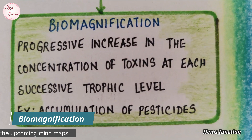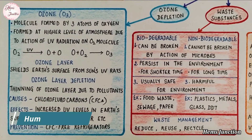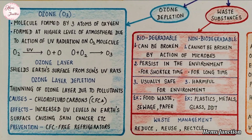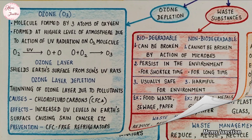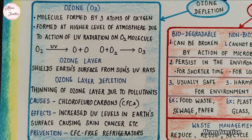Biomagnification, or biological magnification. Human activities affect our environment — they cause pollution and other environmental problems like depletion of the ozone layer and generating a lot of waste substances. Ozone layer depletion: the ozone layer prevents harmful UV rays of the sun from entering the earth's surface. CFCs, mainly found in refrigerators and air conditioners, are the main cause of depletion of the ozone layer.